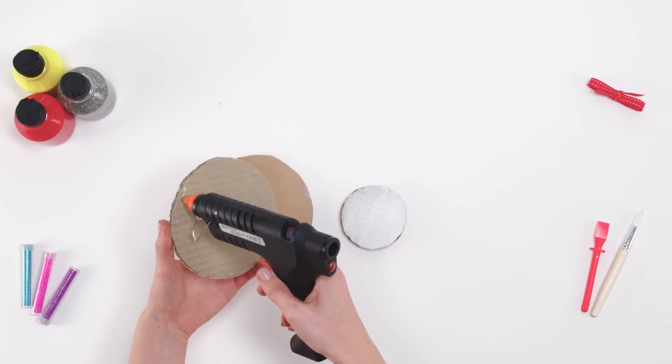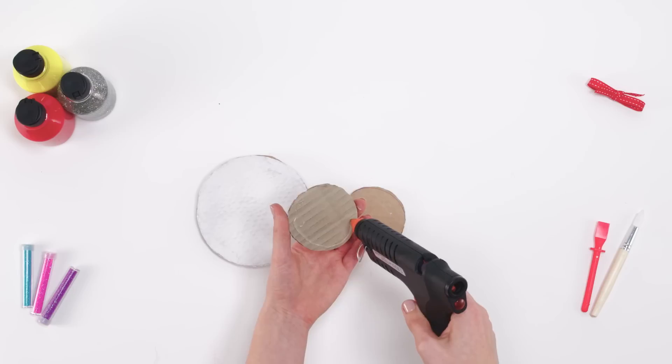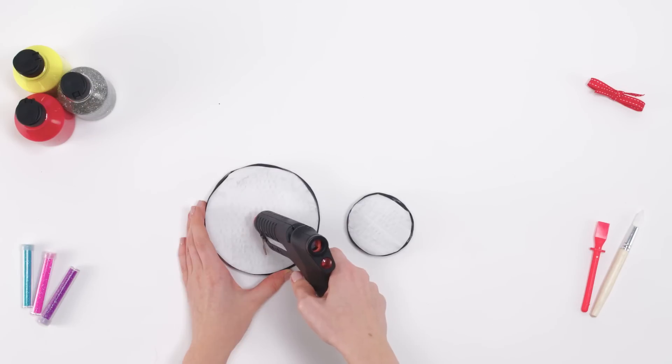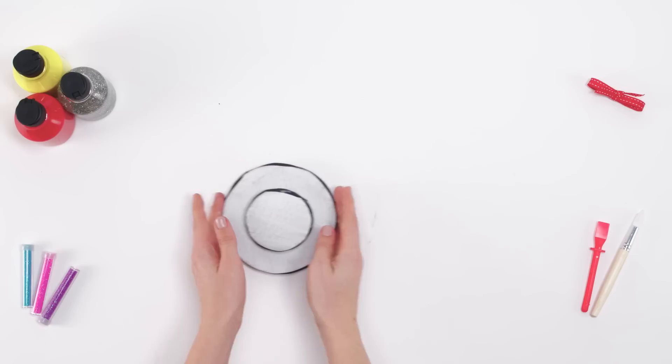Use a glue gun to stick the two big circles together and the two small circles together. Use black tape around the edges, then stick the small circle on top of the big ones to make a base.